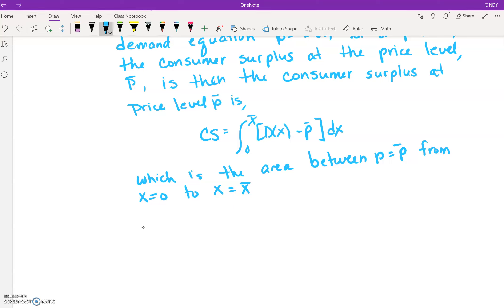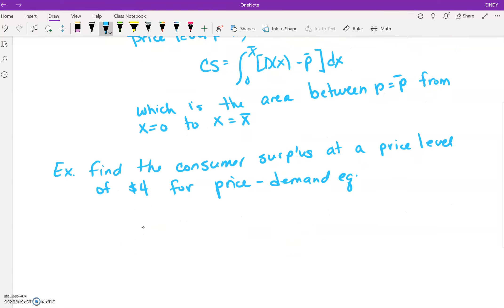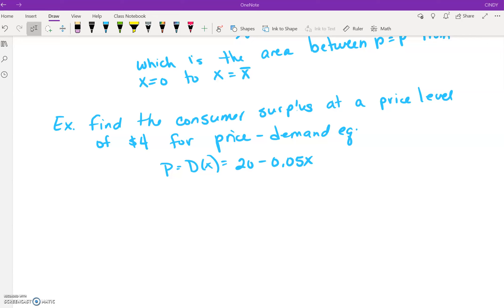Okay, so here is our first example. We are to find the consumer's surplus at a price level of four dollars for the price-demand equation given at p equals D(x), which is equal to 20 minus 0.05x. I'm going to break this down into steps. So the first step is to find x̄.